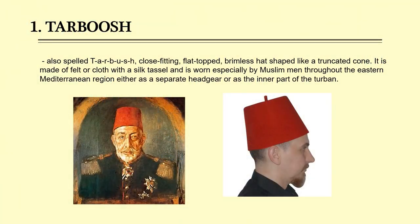Number 1: Tarbush, also spelled T-A-R-B-U-S-H. It is a close-fitting, flat-topped, brimless hat shaped like a truncated cone. It is made of felt or cloth with a silk tassel and is worn specially by Muslim men throughout the Eastern Mediterranean region, either as a separate head covering or as the inner part of the turban.